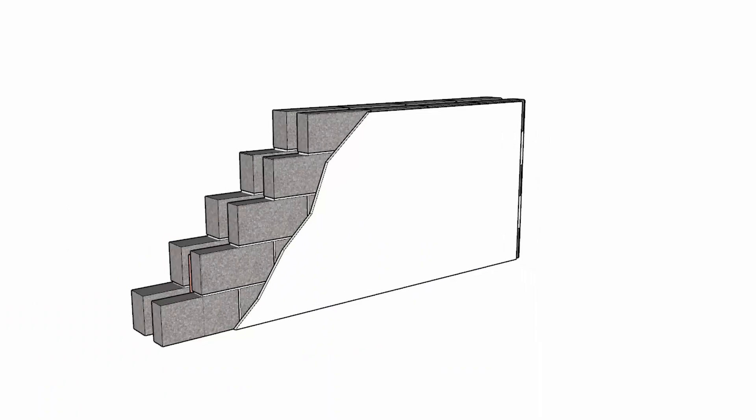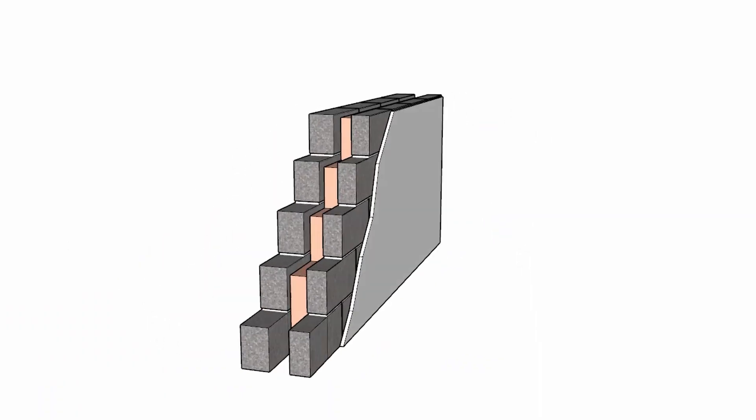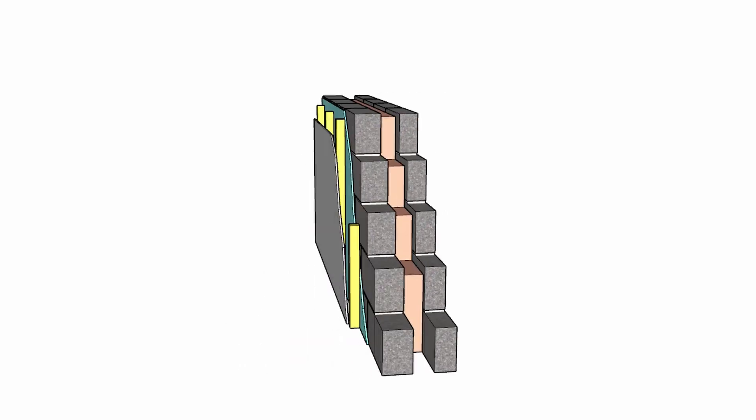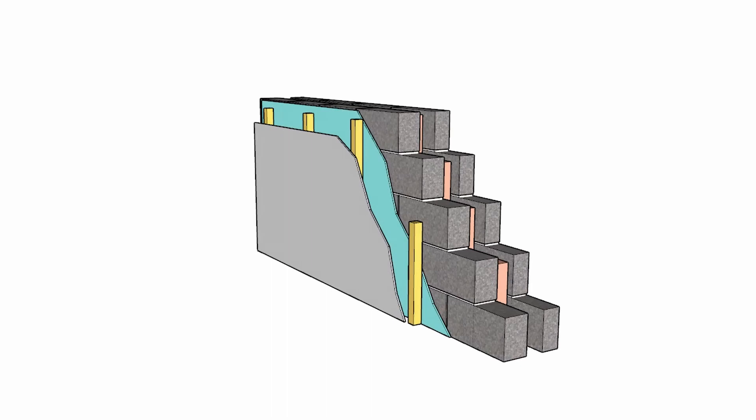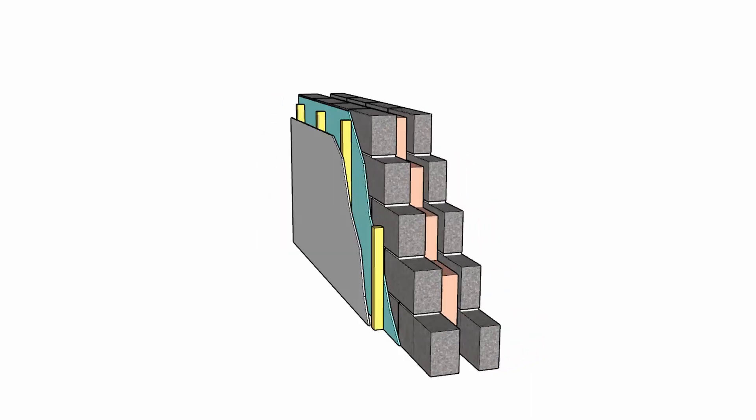So the wall that we're looking at is a double-skinned masonry wall with a full-fill cavity. The external surface is covered in render and the internal finish is framed out with 50mm battens and plasterboard.